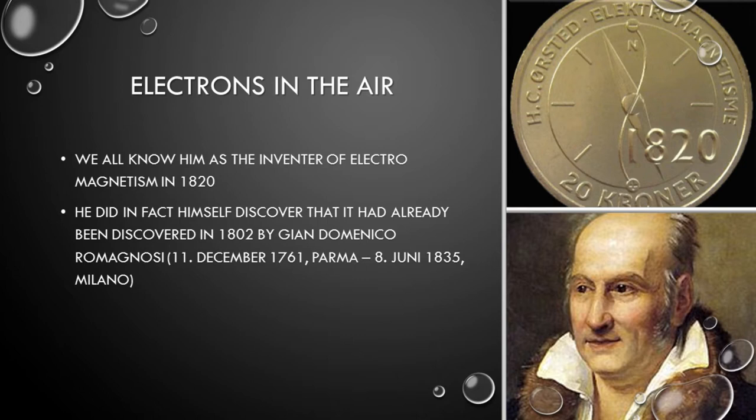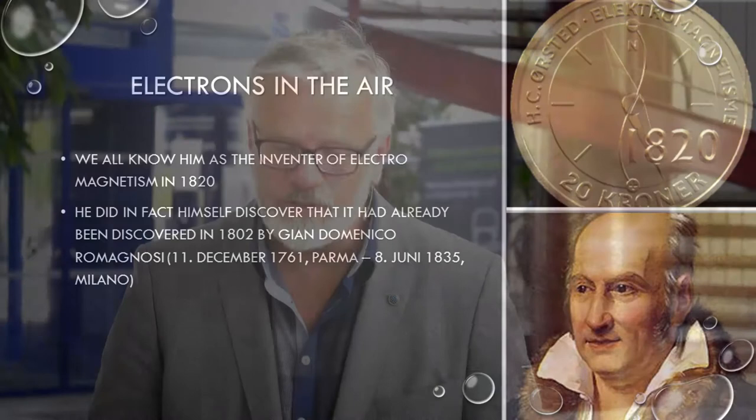We all know him as the inventor of electromagnetism. He did that in 1820 with a series of papers and a book. However, he himself found out that it had already been discovered in 1802 by the Italian philosopher and scientist Gianni Domenico Romagnosi, who lived around the 1760s and died in 1835. He was from Milan. That didn't bother Ørsted at all. As he stated quite plainly: he may have discovered it, but I have refined it and made it publicly available to anybody. And he was right — it was only after Ørsted that people like Faraday in Britain came to the conclusion that there's something here we need to look into.